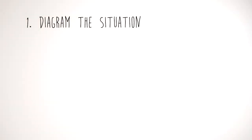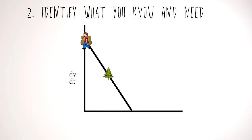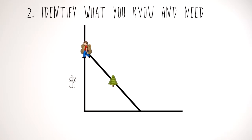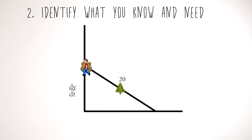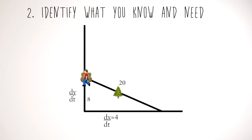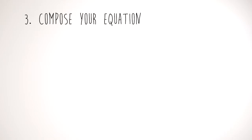So now that we've drawn the diagram, we have to identify what we are looking for — it's going to be dy/dt, the derivative of y. Now we have to identify what we know: z equals 20, dx/dt equals 4, and y equals 8. The quantities that are changing in this problem are x and y. Now we have to identify the equation that relates the variables. Since the problem is about a right triangle relating three sides, we can use z² = x² + y², or the Pythagorean Theorem.